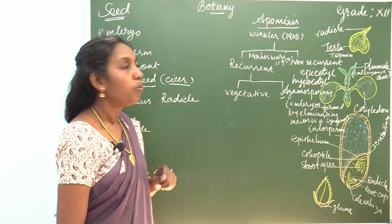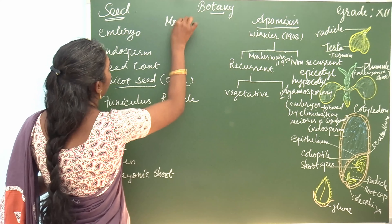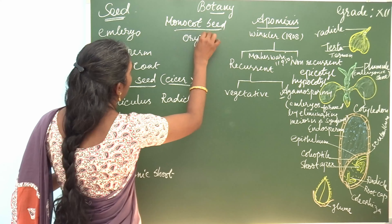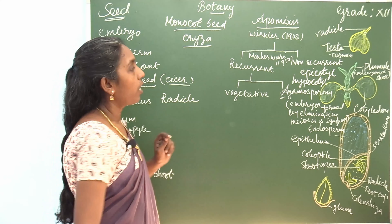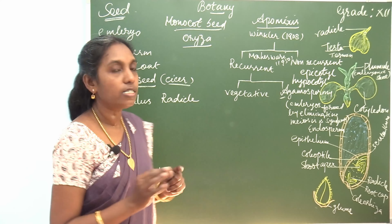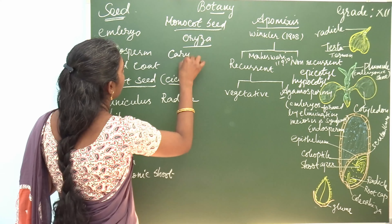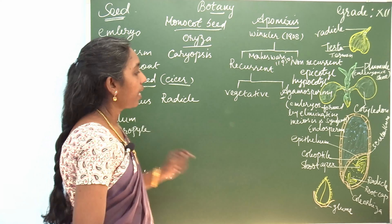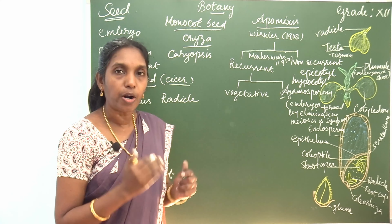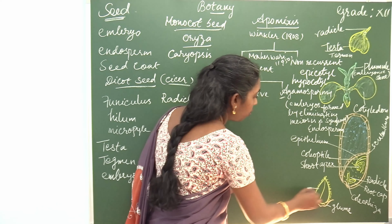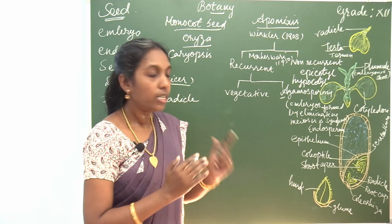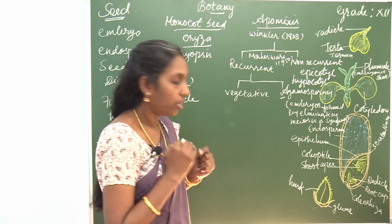Another example is the monocot seed. The example of monocot seed is Oryza sativa. The Oryza seed is a single seed and the name of this type is caryopsis. It is covered by an outer brownish coat named husk.